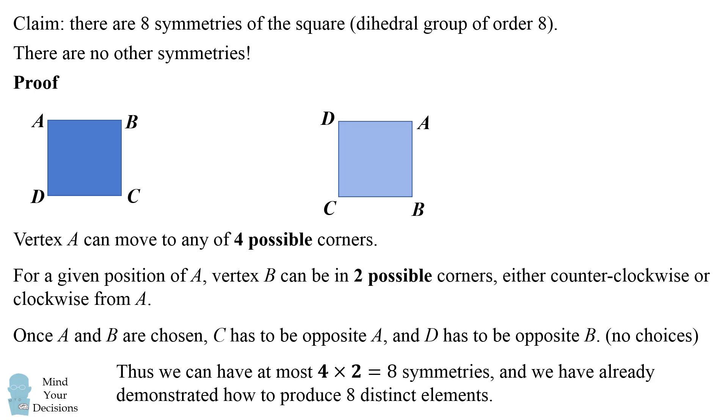Thus we can have at most four times two, which equals eight symmetries of the square. And we've already demonstrated how to produce eight distinct elements. So this shows there are at most eight symmetries and we've demonstrated eight symmetries. We've established the dihedral group of order eight.